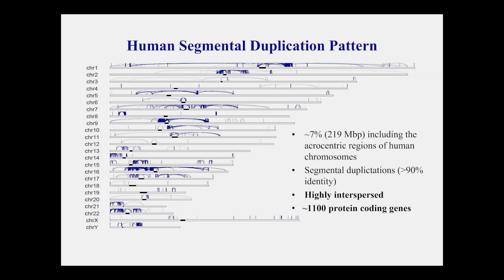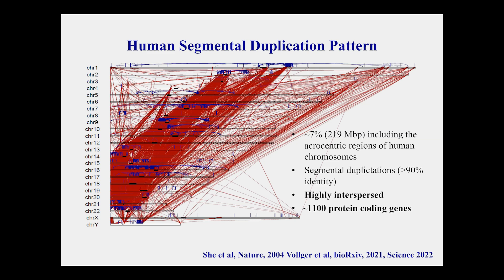Segmental duplications refer to the most recent, highly identical duplications — greater than 90% identical. The blue lines show the pattern of intra-chromosomal duplications in the human genome; many duplications are separated from their nearest neighbor by often megabases of sequence. The pattern shows biases near chromosome ends — subtelomeric bias — and toward centromeric regions — pericentromeric bias.